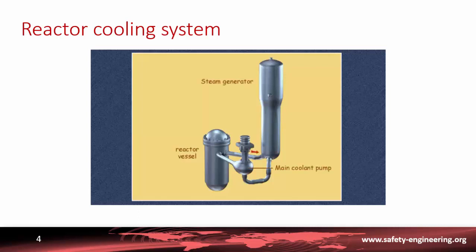The water leaves the reactor vessel through a large pipe called the hot leg and enters the steam generator. Here it is cooled by the secondary water, which is vaporized. It is then sucked into the intermediate leg by the main coolant pump and discharged into the reactor vessel through the cold leg.